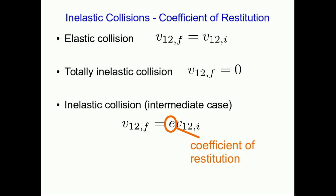The word restitution means sort of restoration. How much of the original relative speed is restored to the system after the collision is over. The coefficient of restitution for the collision is defined as the ratio of the final over the initial relative speeds.